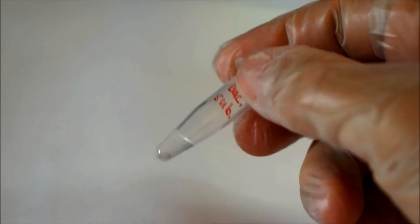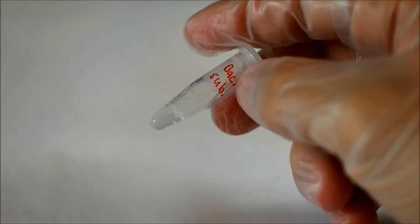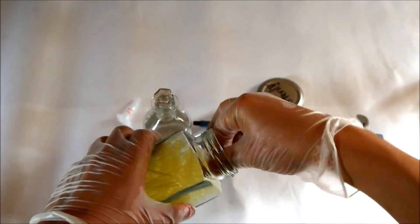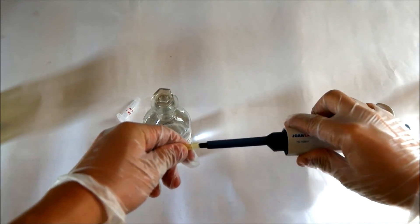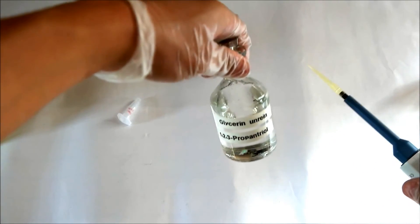Now I labeled the eppendorf tube with Bacillus subtilis and I will invert it a few times to get rid of the pellet. Now put an aseptic pipet tip on your pipet and fill the tube up with glycerol.